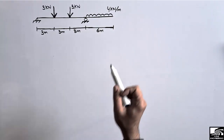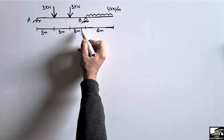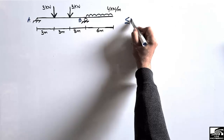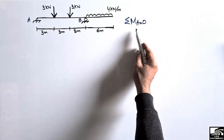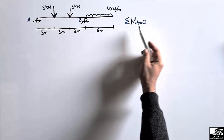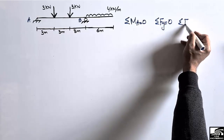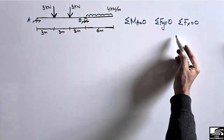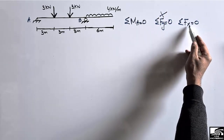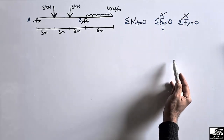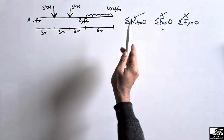To start with the support reactions, let's consider support A and support B. We can use three equilibrium equations: summation of moments, summation of vertical forces equal to zero, and summation of horizontal forces equal to zero. However, here we have two unknowns, and there are no horizontal forces, so the only way to find the support reactions is by taking the summation of moments at a point equal to zero.